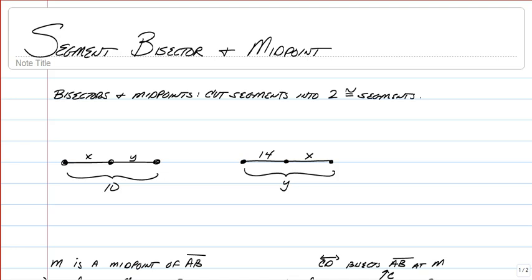Basically, bisectors and midpoints do the same thing. They cut segments into two congruent pieces. In other words, they just cut segments in half. So if you have a segment that's ten units long and it gets bisected or there's a midpoint, it's just going to cut it into five and five. So you're going to have two five-unit segments that are going to make up a ten-unit segment.